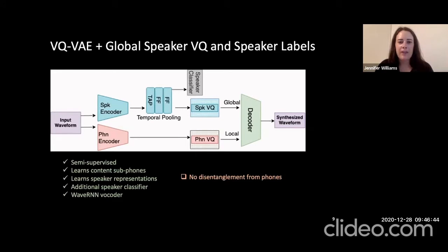To address instability, we added a speaker classifier to the speaker encoder space, which helps guide the type of information the speaker encoder learns. Every other component remains the same — we still have a phone encoder and a speaker encoder, and our decoder is a WaveRNN vocoder using global and local conditioning. This approach is semi-supervised: it learns content subphones and speaker representations using the additional speaker classifier. However, we are concerned that it does not necessarily disentangle the speaker identity from the phones.